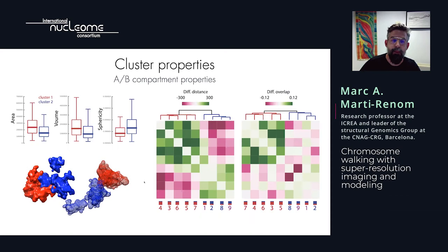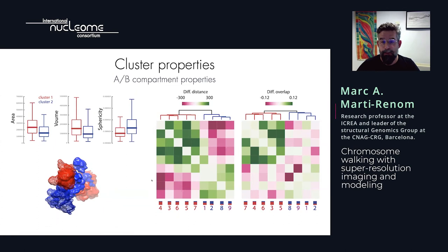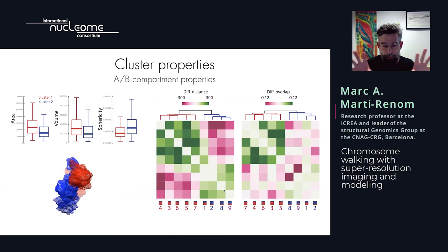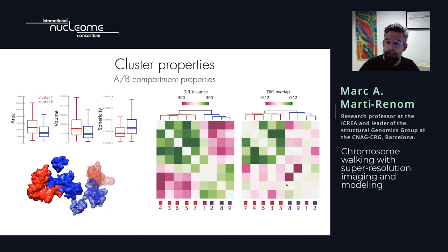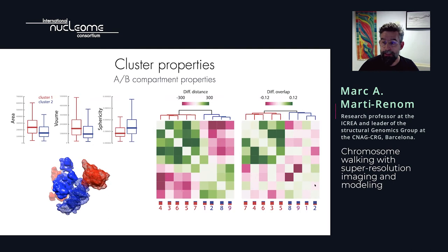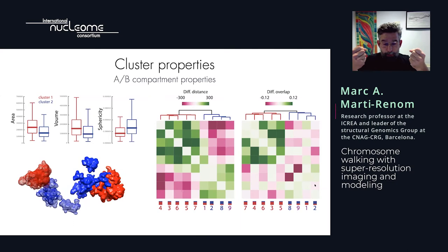Area, volume, and sphericity, as well as distance and overlap clustering, also gave us two compartmentalization groups. Interestingly, something you cannot get only from HI-C: A compartments like to be separated from B compartments, which we already knew. But A compartments also like to intermingle with each other, while B compartments tend to be closed but do not overlap. So A compartments are close and overlap, while B compartments are close but do not intermingle.